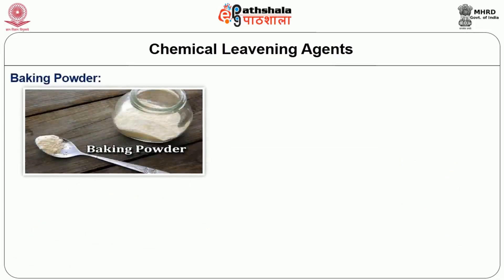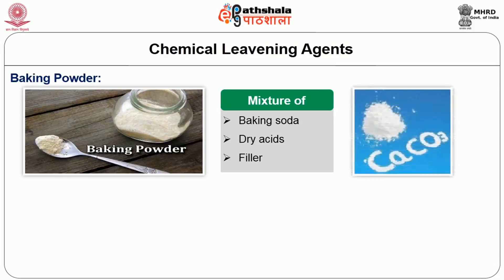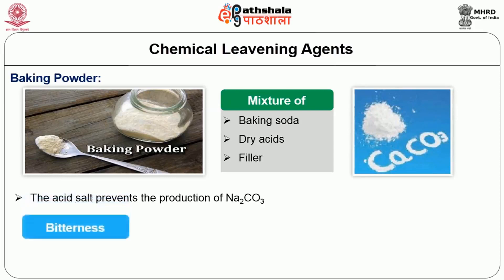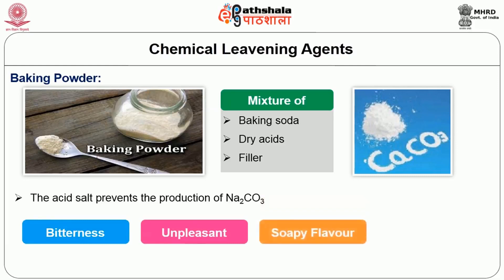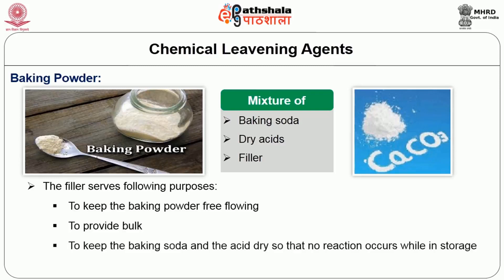Baking powder is a mixture of baking soda, dry acids, and a filler — usually corn starch or calcium carbonate. The acid salt prevents the production of sodium carbonate, which causes bitterness, unpleasant soapy flavor, and a yellowish color in the product. The filler serves several purposes: to keep the baking powder free-flowing, to provide bulk, to keep the baking soda and acid dry so that no reaction occurs during storage, and to help release the standard amount of carbon dioxide.